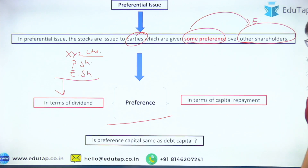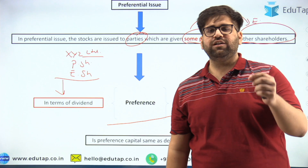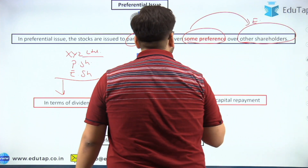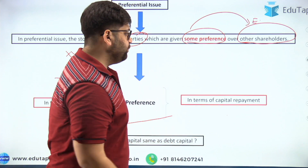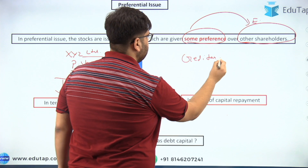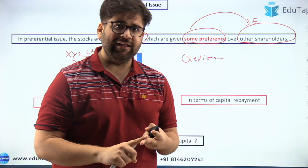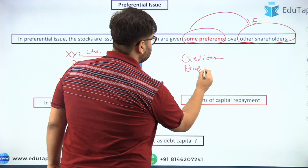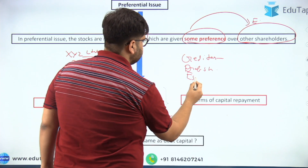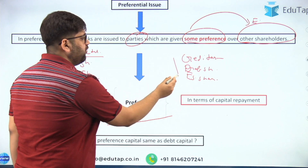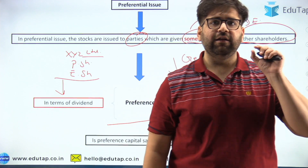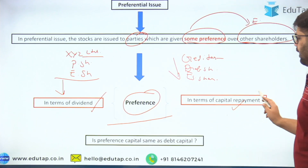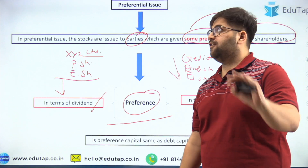The second type of preference is capital repayment. When a company is going under liquidation or closing its business, preference shareholders will be paid their capital before equity shareholders. First, creditors such as debenture holders and financial institutions are paid, then preference shareholders receive their capital, and finally equity shareholders are paid. This order of repayment makes the word 'preference' very clear — preference is given in terms of dividend and capital repayment.